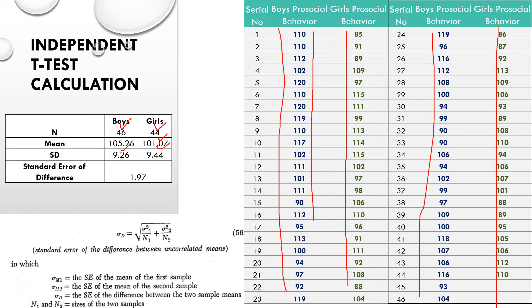Then we calculate the standard deviation. The standard deviation for boys is 9.26 and for girls it is 9.44. Next we have to calculate the standard error of difference. For an independent sample t-test we have a specific formula for the standard error of difference.